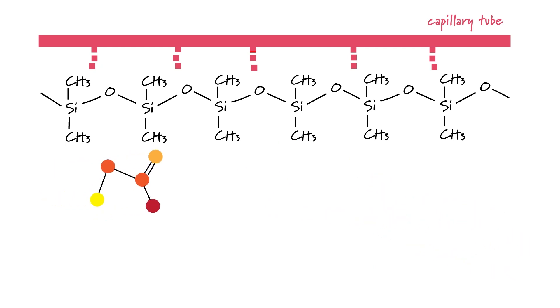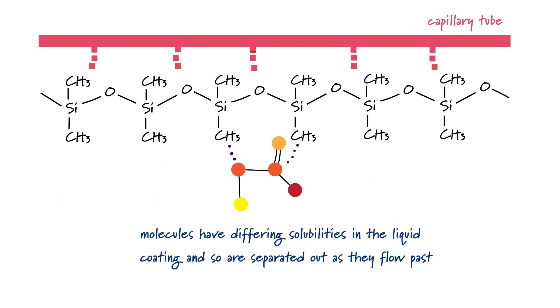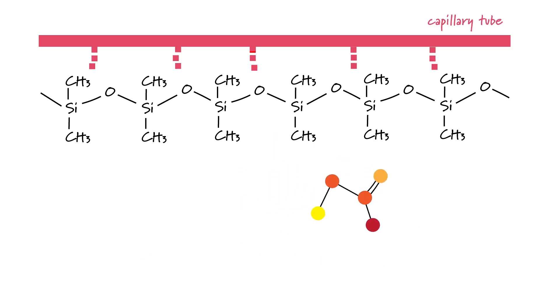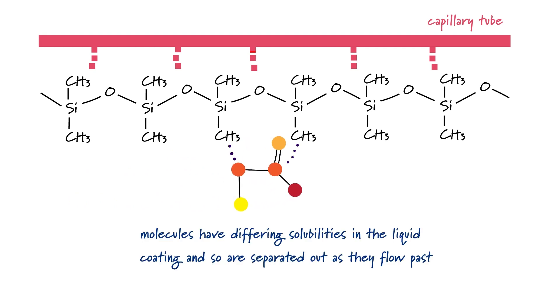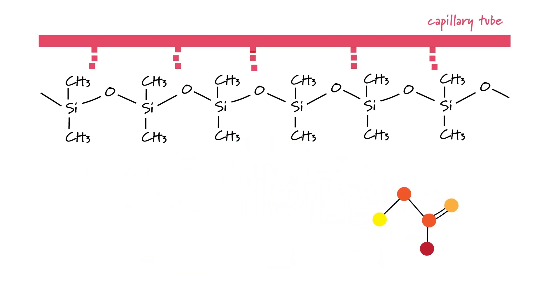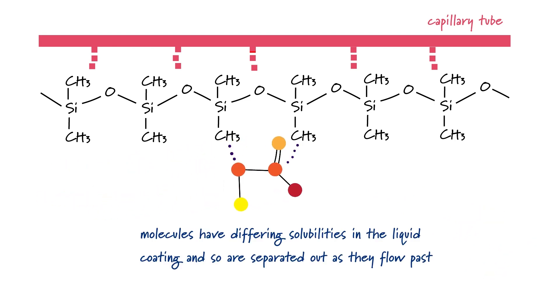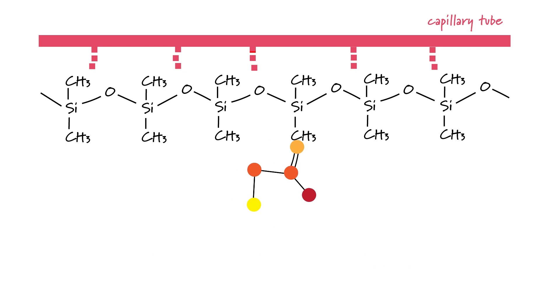This polymer is a good choice because we can easily change the side groups on the chain. For example the methyl group for maybe a cyanide group or a benzene ring and hence we can influence the types of intermolecular bonding that happen between the stationary phase and the substances in the mixture. This is how we can use GLC to separate out a wide range of mixtures.